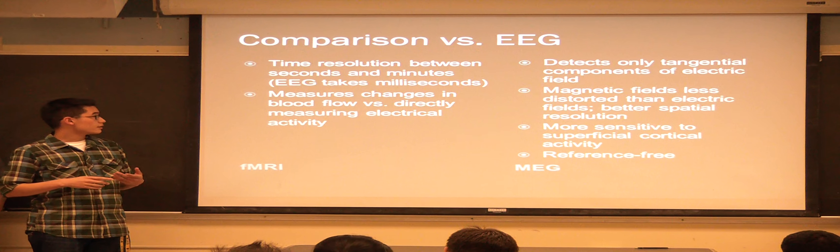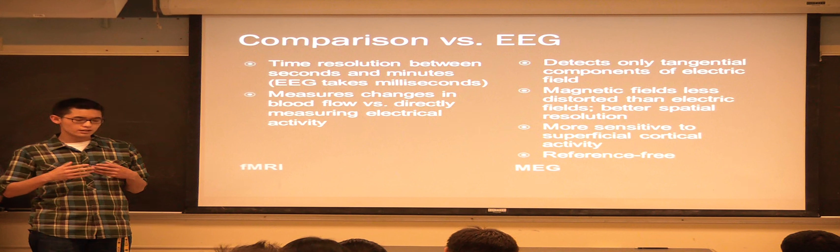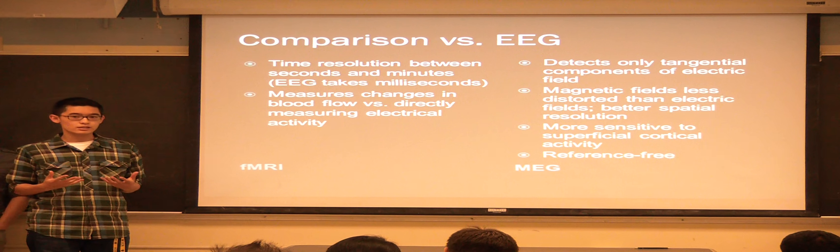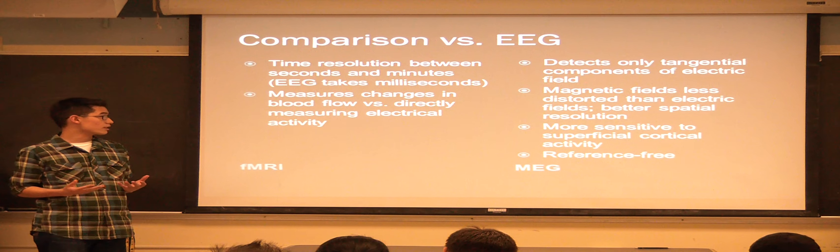With the fMRI, we see that the time resolution takes between seconds and minutes, whereas the EEG takes only milliseconds.